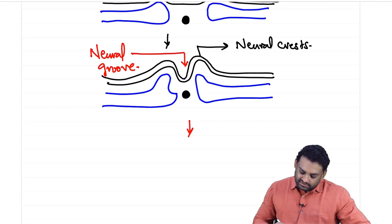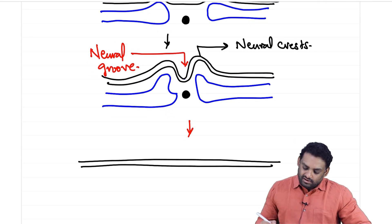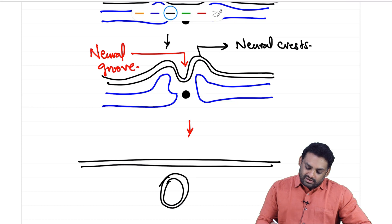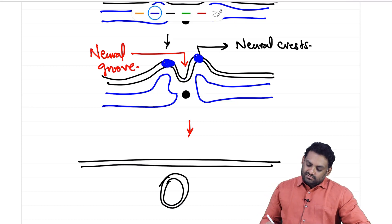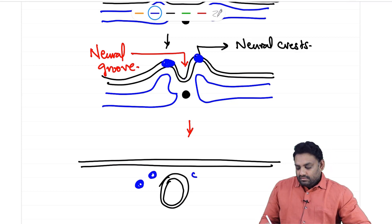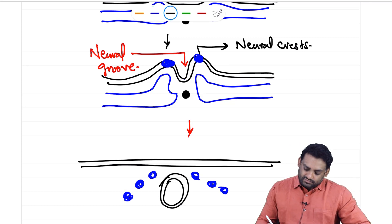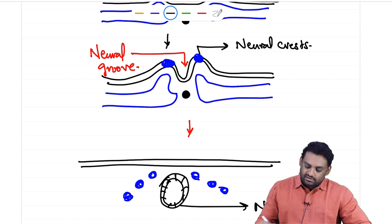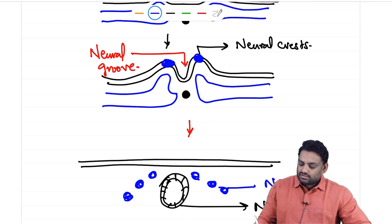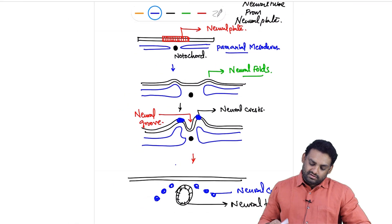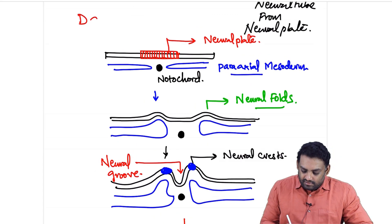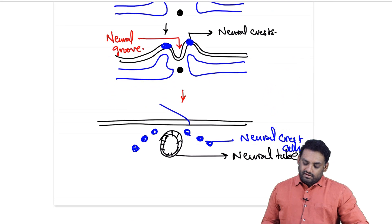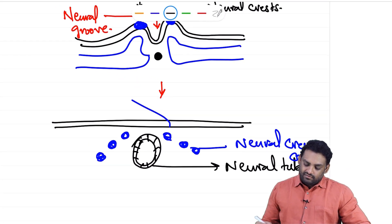The neural groove then detaches from the surface ectoderm and forms the neural tube below. The neural crest cells detach and form on either side of the neural tube. All of this happens on day 20 of intrauterine life.